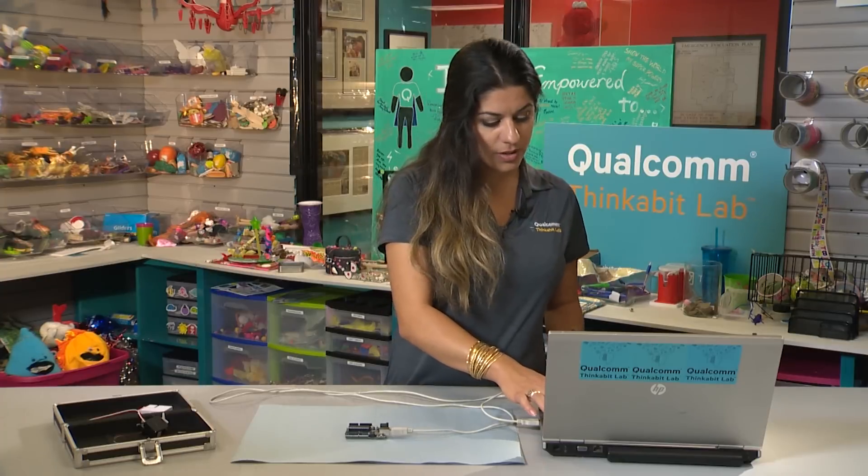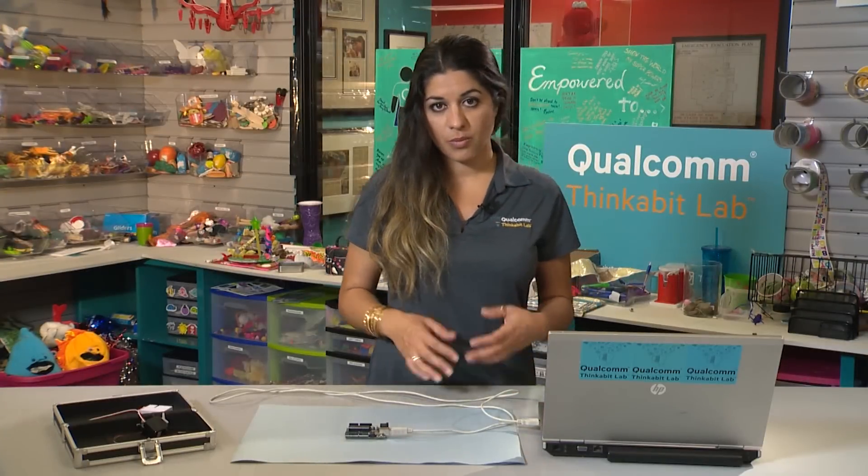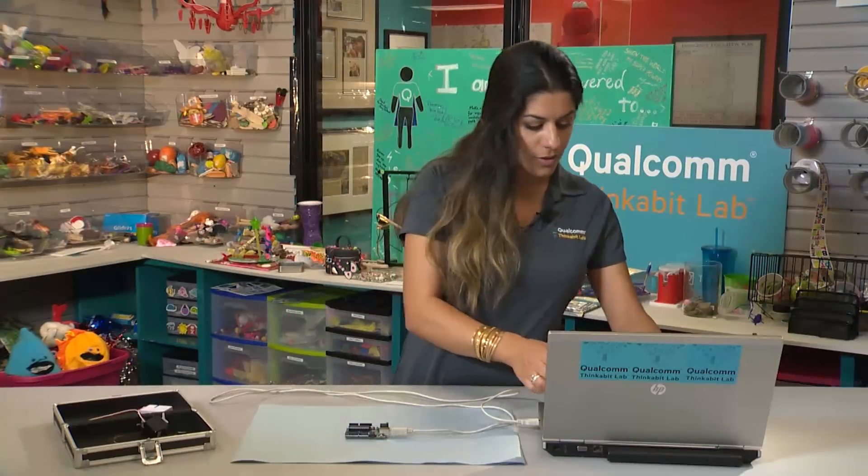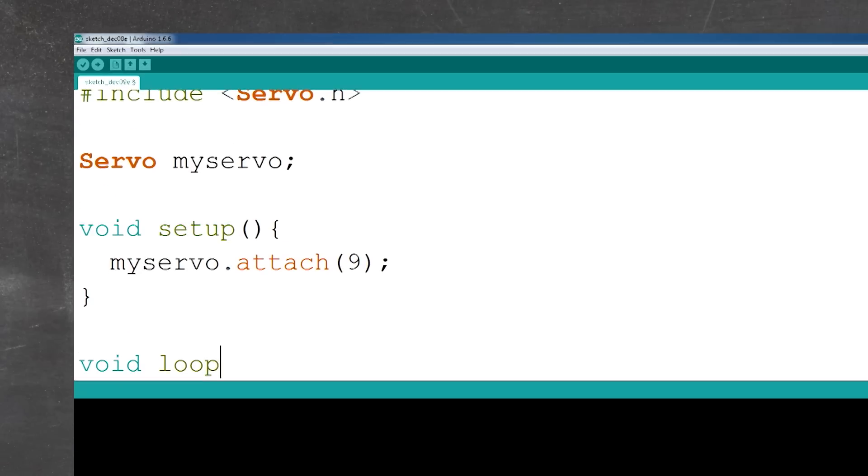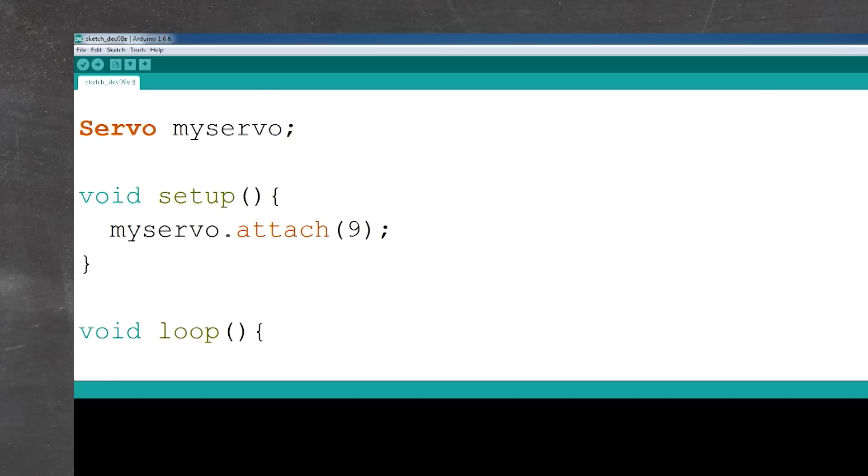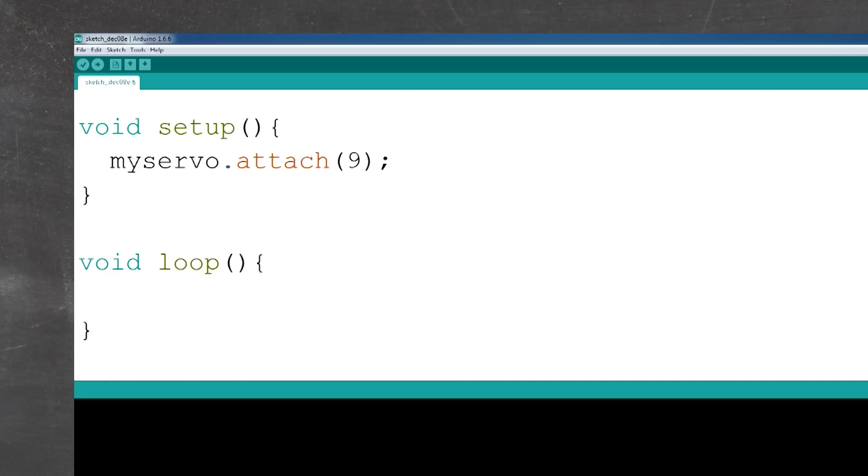The next thing I want us to do is actually go into the void loop. We're going to write a void loop. This is where the action happens. All the lines in the void loop run over and over again. So we're going to write void loop, open close parentheses, open bracket, enter. Notice there's a closed bracket. We're going to write our lines of code inside there.